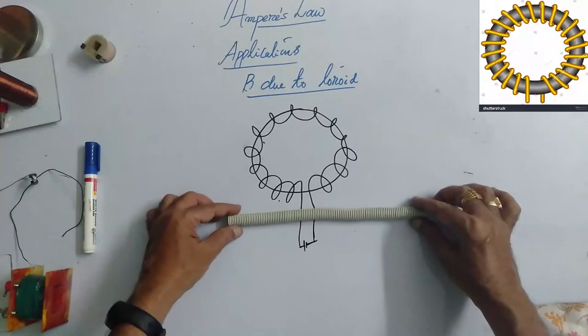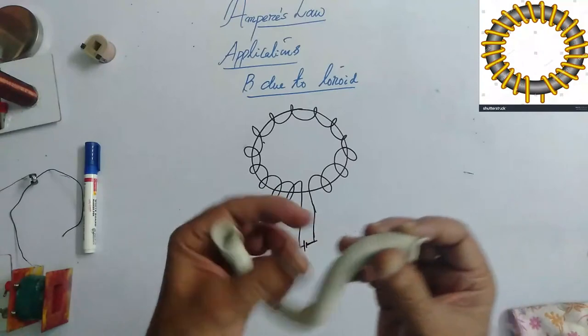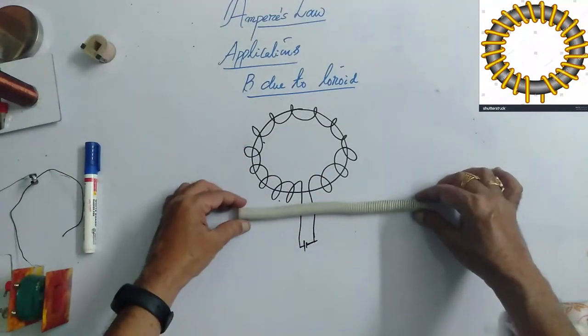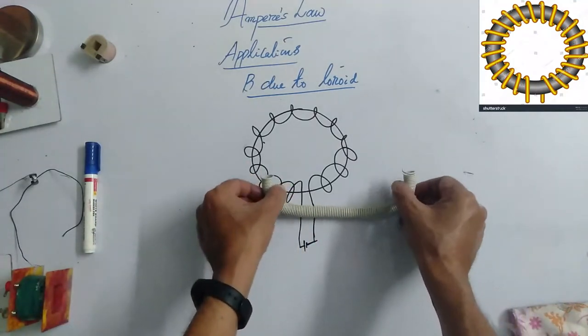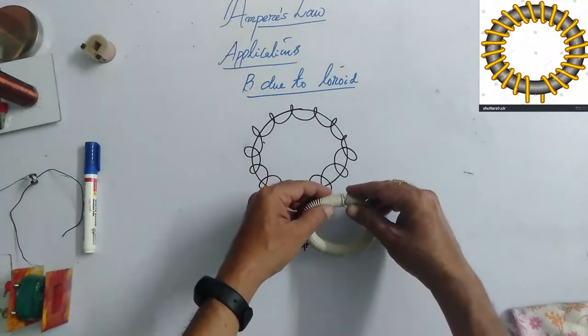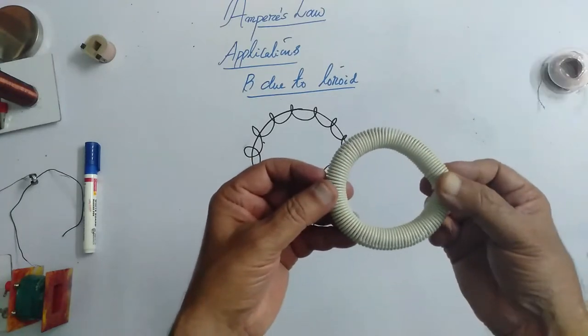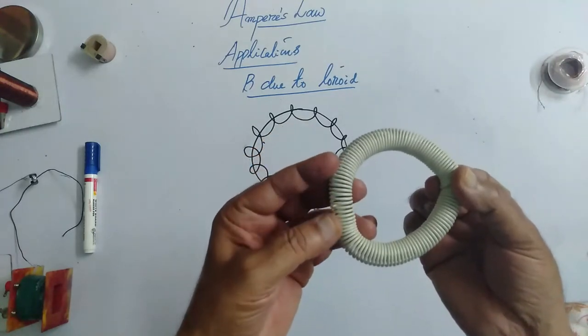then we call it as solenoid. Let us visualize how a toroidal solenoid could be. You are seeing that there are many spirals. Consider that this is a straight long solenoid. Now, if I make it a loop, then this becomes a toroidal solenoid. It is also known as endless solenoid.